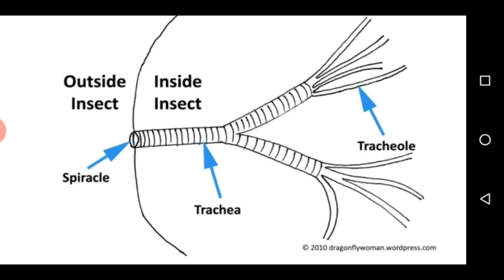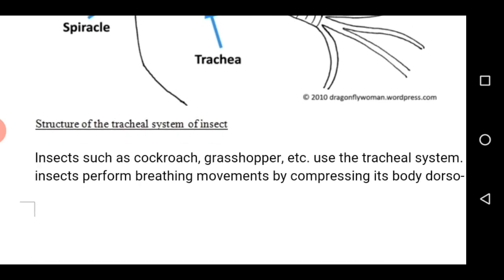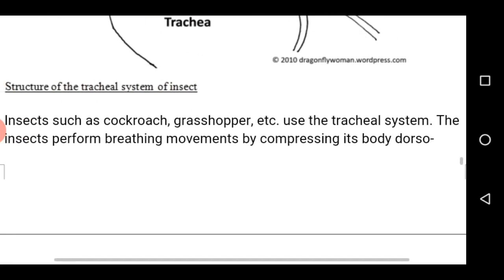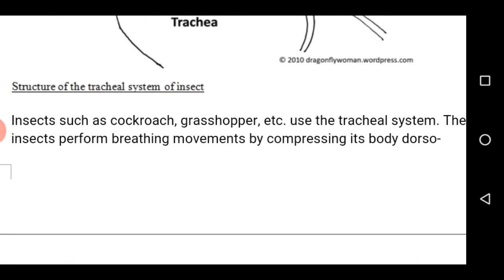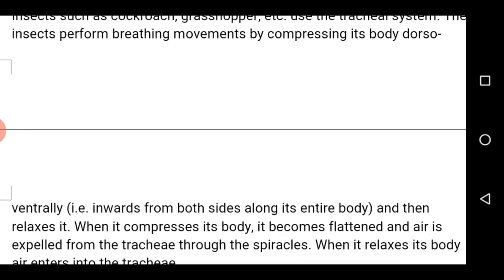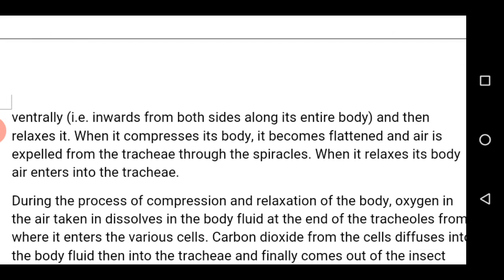Gases enter through the spiracles and move into the inner side of the insect. Insects such as cockroach and grasshopper use the tracheal system, and they perform what we refer to as a breathing movement — that is, compression and relaxation of the abdominal region. This compression makes the abdominal region become flattened and air is expelled from the trachea through the spiracles. When the abdominal region relaxes, air enters into the trachea and from the trachea to the tracheoles.